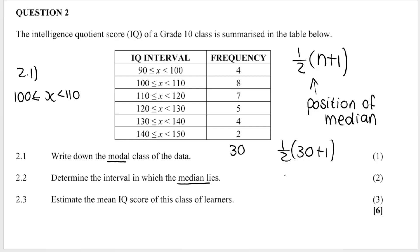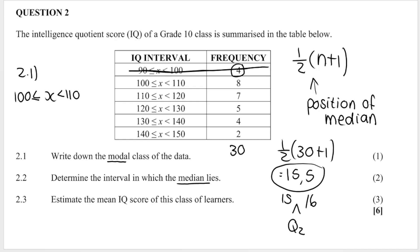The median is at position 15.5, meaning it lies between the 15th and 16th data points. The first four grade 10s lie in the first interval. The next eight lie in the second interval, bringing us to a cumulative total of 12. Then the next seven lie in the third interval, so the 13th through 19th learners are in that interval.